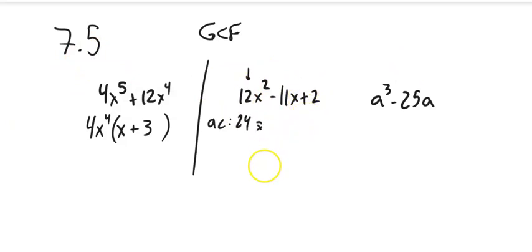And I want things that multiply to 24 but add to negative 11. And so they're both going to be negative, right? Multiply to a positive number, add to a negative. So negative 1, negative 24. I'm just going to list factors till I find it. Negative 12. Let's see, negative 3 and negative 8. I think that's it, negative 3 and negative 8.